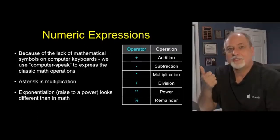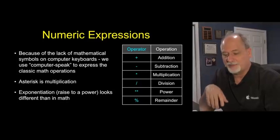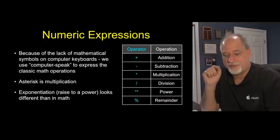So plus is addition, minus is subtraction. We don't have a times sign or a dot in the middle, so we use the asterisk as multiplication. Division, we can't put two things over top of each other, so we use slash for division.